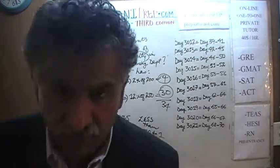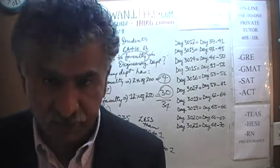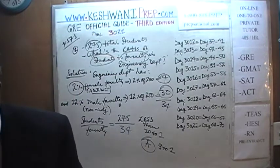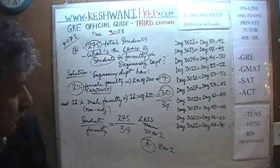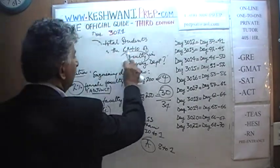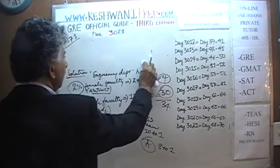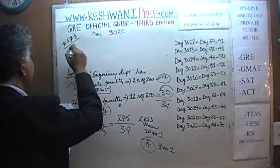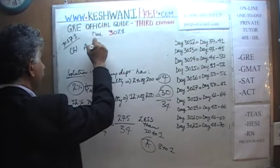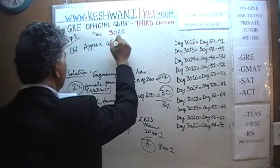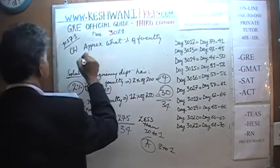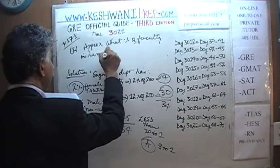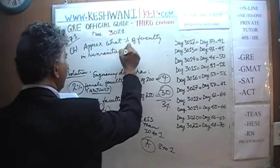Let's do number 2. Now we move on to question number 2 — we are no longer in the engineering department. We are now in Humanities. Question number 2 asks: approximately what percentage of faculty in Humanities is male? By male, we mean non-adjunct.